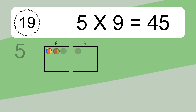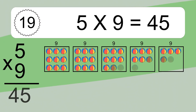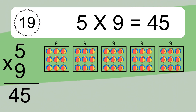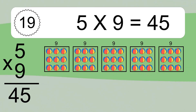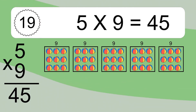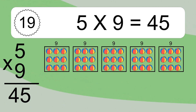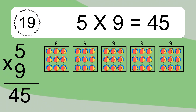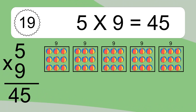5 times 9 equals what? 5 times 9 equals 45.